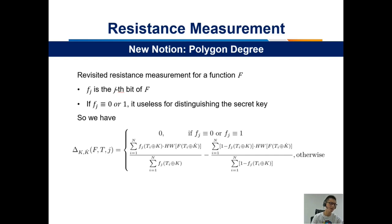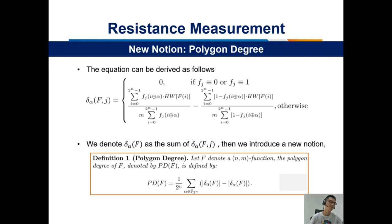This is not a hard problem to fix. In unbalanced functions, some output bits may always be 0 or 1, which are useless for distinguishing the secret key. So when the output bits are always 0 or 1, we define the differential value equal to 0. Summing the distinguishing value on all bits for all key hypotheses, we get a new notion which is able to measure the DPA resilience for all functions. This notion is named Polygon Degree in our work.